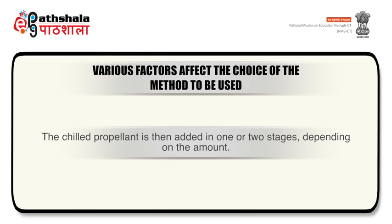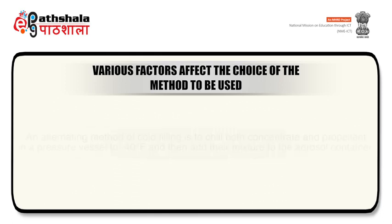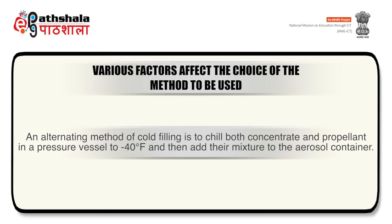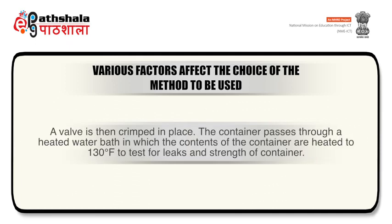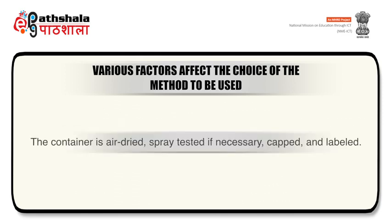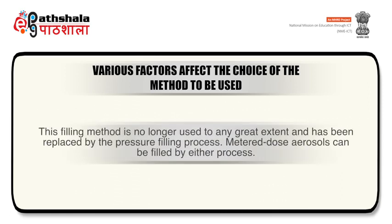The chilled propellant is then added in one or two stages depending on the amount. An alternative method of cold filling is to chill both the concentrate and propellant in a pressure vessel to minus 40 degrees Fahrenheit and then adding their mixture to the aerosol container. A valve is then crimped in place. The container passes through a heated water bath in which the contents are heated to 130 degrees Fahrenheit to test for leaks and strength of container. The container is air dried, spray tested if necessary, capped and labeled. This filling method is no longer used to any great extent and has been replaced by the pressure filling method.